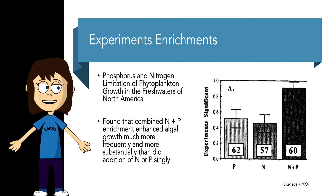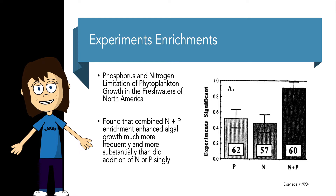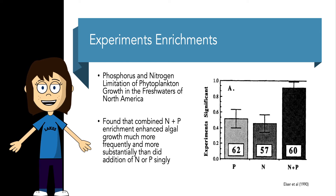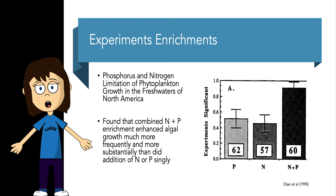A lot of these results were synthesized in a paper by Jim Elser looking at phosphorus and nitrogen limitation of phytoplankton growth in the fresh waters of North America. What these limnologists found was that combined nitrogen and phosphorus enrichments enhanced algal growth much more frequently and more substantially than did the addition of nitrogen or phosphorus by themselves. The takeaway is that nitrogen and phosphorus co-limitation is probably occurring very regularly in North American lakes, although there's still a significant number of cases of either phosphorus or nitrogen limitation by themselves.